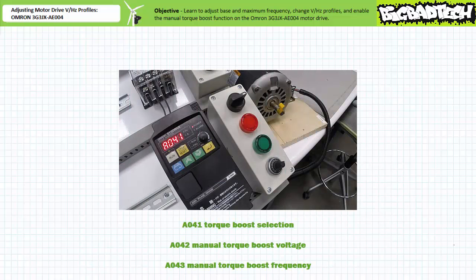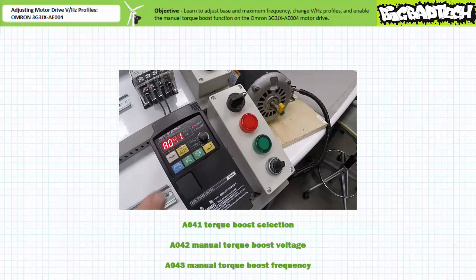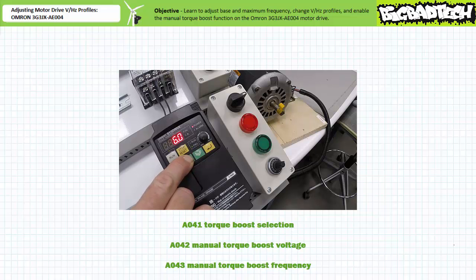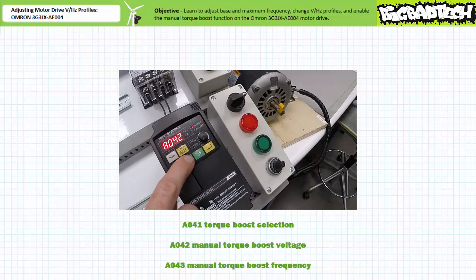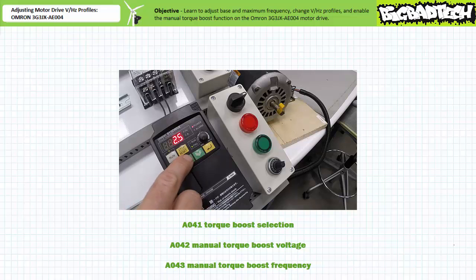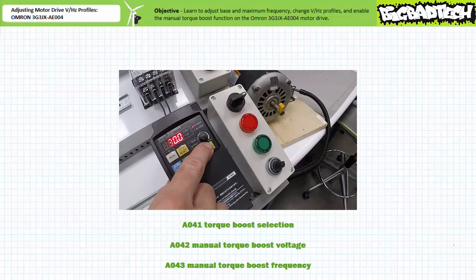Leave extended function parameter A041, torque boost, in the default 00 manual state. Navigate to extended function parameter A042, manual torque boost voltage. Select mode, increment to plus 20 percent, then select enter to save it. Navigate to extended function parameter A043, manual torque boost frequency. Select mode, increment it to 30 percent of base, or 18 hertz, and select enter to save it.